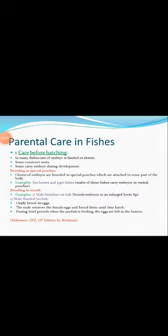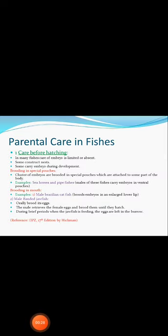In fishes, parental care is any behavior pattern in which a parent invests time or energy in feeding and protecting its offspring. Parental care is a form of altruism since this type of behavior involves increasing the fitness of the offspring at the expense of the parents. The evolution of parental care is beneficial as it facilitates offspring performance traits that are ultimately tied to offspring fitness.